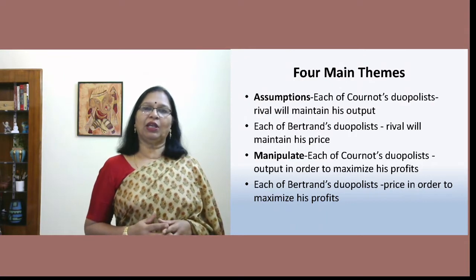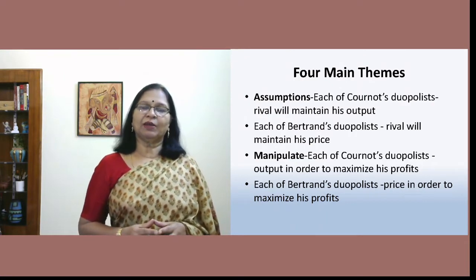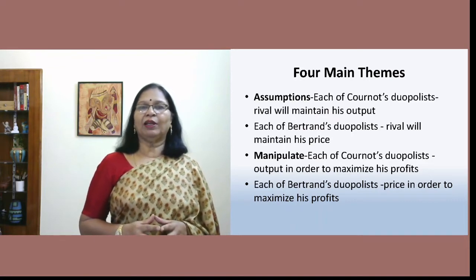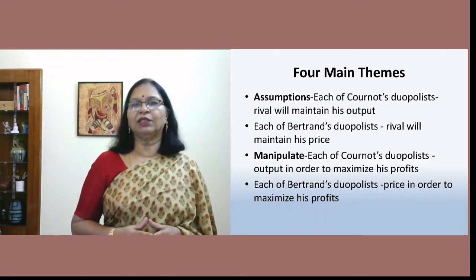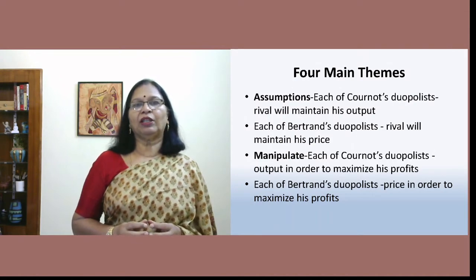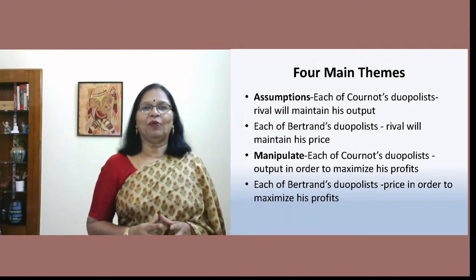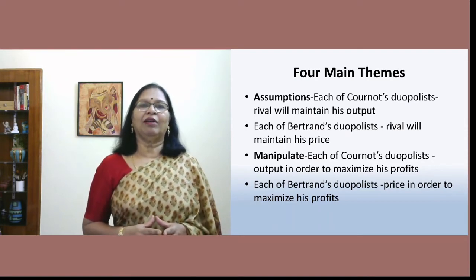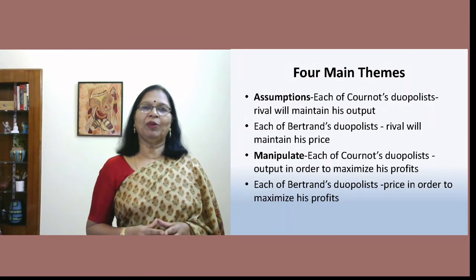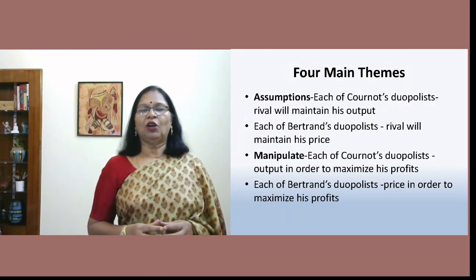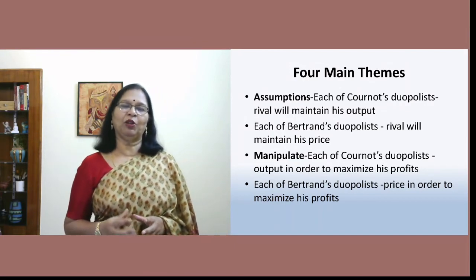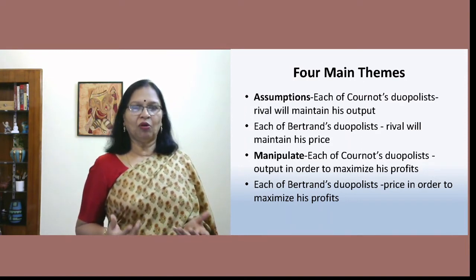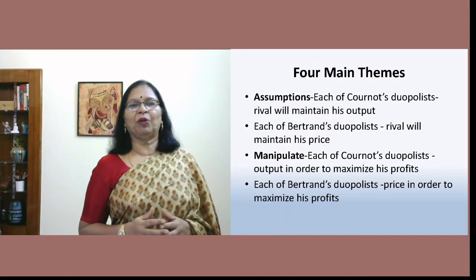In terms of assumption, the Cournot model believes that the rival will keep the output constant, whereas in Bertrand's model the rival will keep the price constant. Coming to how the two firms will manipulate the situation: in the Cournot model the firm will manipulate the output, whereas in the Bertrand model the firm will manipulate the prices. So there are two different approaches to the same problem of how to attain equilibrium under this market.